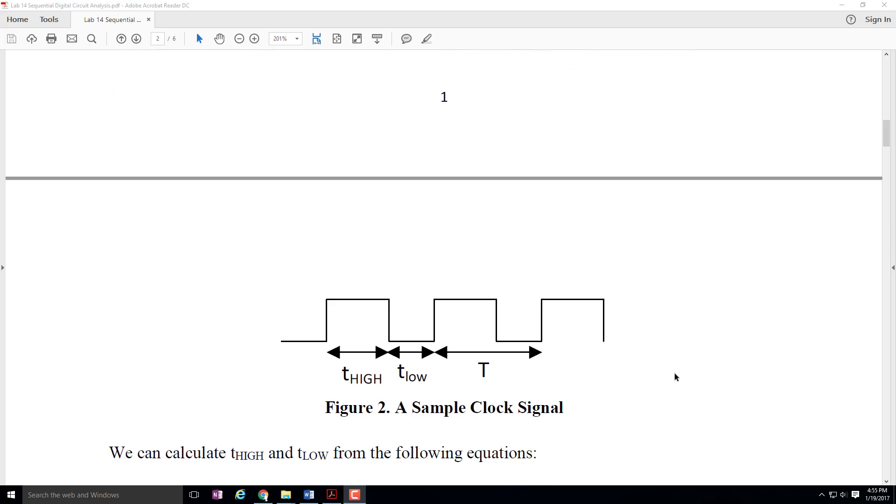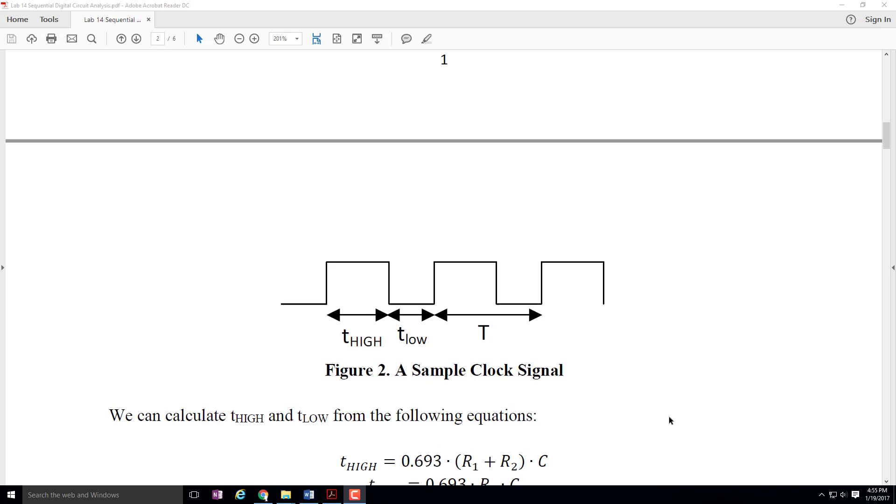So here is the waveform that's going to be generated. It'll have a high period and a low period. Now, by definition, and you'll see this in the equations here in a second, the high period is going to have to be at least as long as the low period. It's really not possible for it to be shorter than the low time, but we can calculate T high and we can calculate T low, and then we can also calculate T, the total period. The total period is just simply going to be T high plus T low.